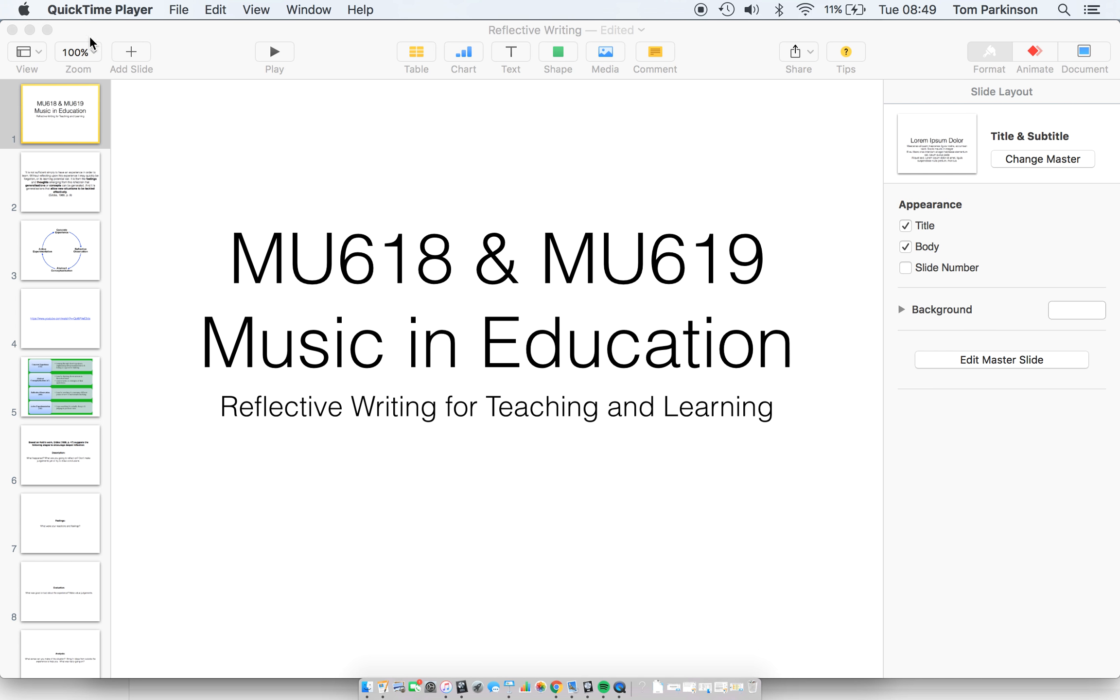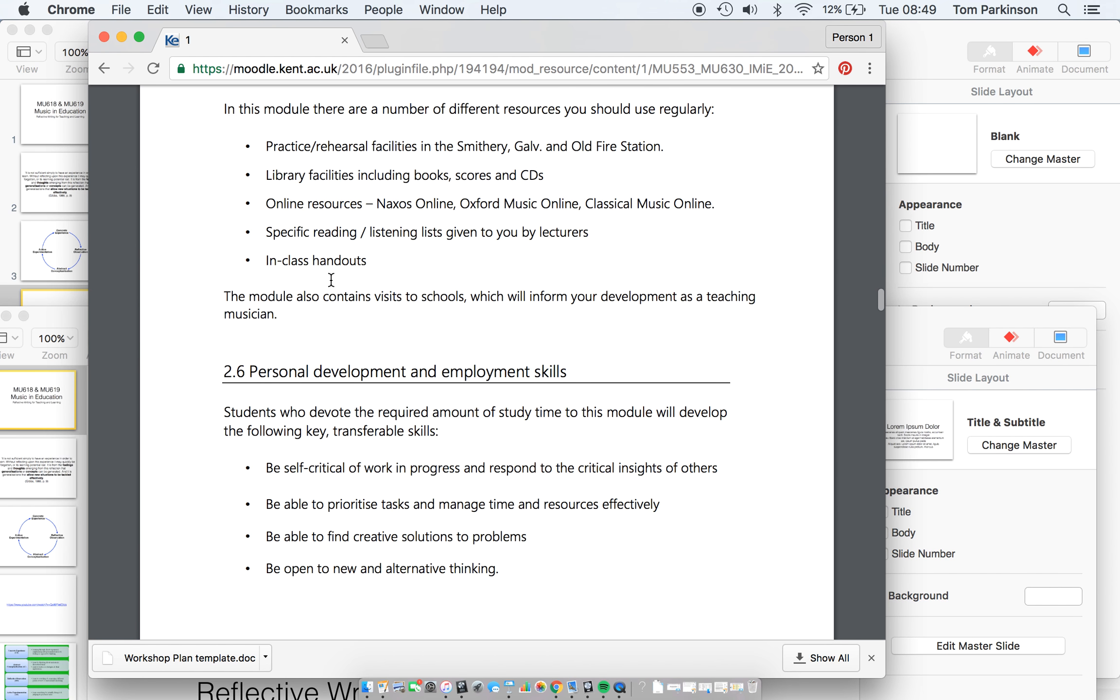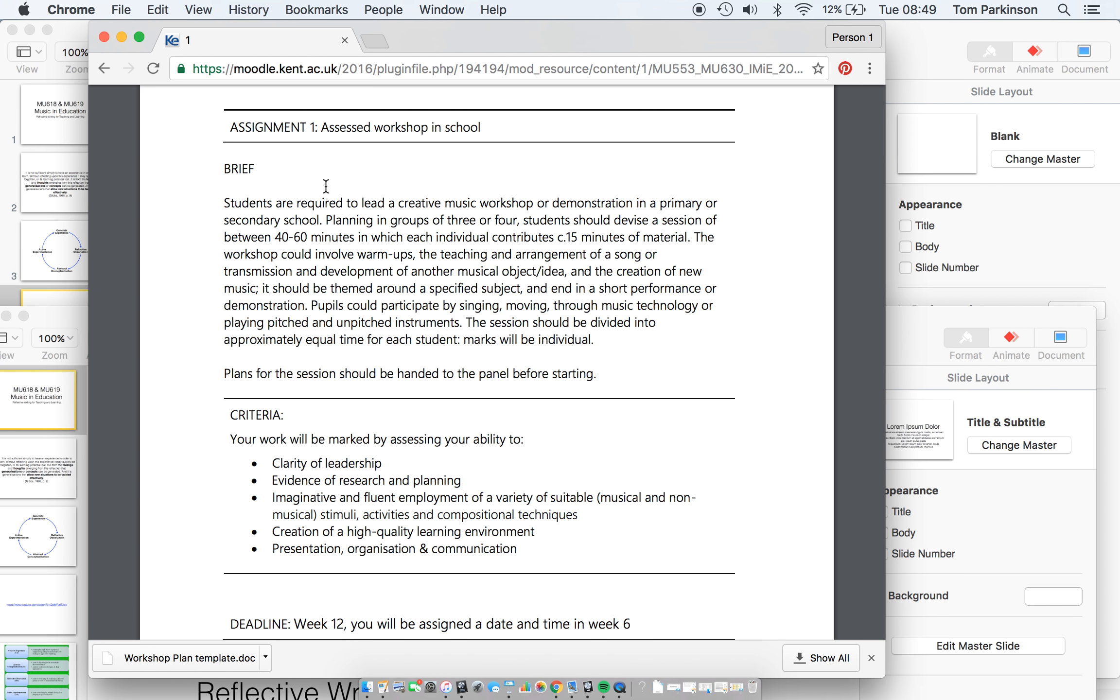Okay, so let's have a look at the assignment brief quickly. Yeah, so the assessed workshop in the school, as has already been explained to you, you're doing a 40 to 60 minute group session. Okay, so for those of you that are in the group of four, it's probably going to be a slightly shorter workshop than those in the group of five. But you're delivering this as a group, and within that group, remember each person has to contribute a proportion of time when they are leading something. So we've been through this in class, but you've divvied up your session into phases as it were.